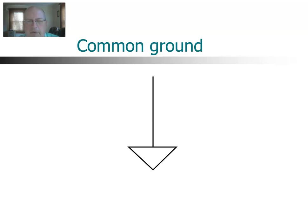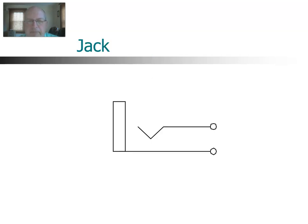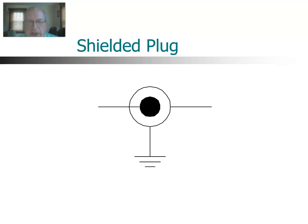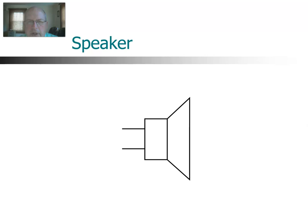We also have a common ground. Here is a jack — like a headphone jack — and a plug, like the plug on the end of headphones. A shielded plug, sometimes referred to as an RCA plug. And here is a symbol for a speaker.